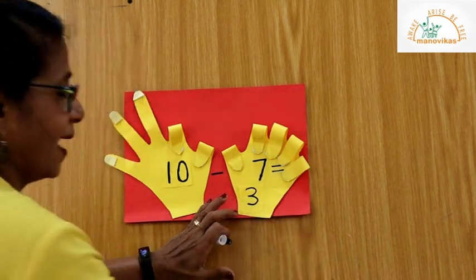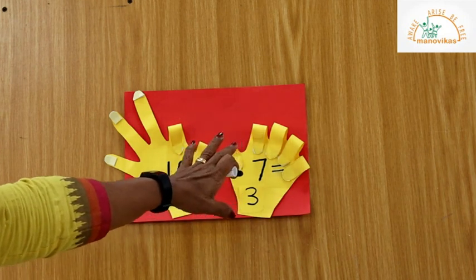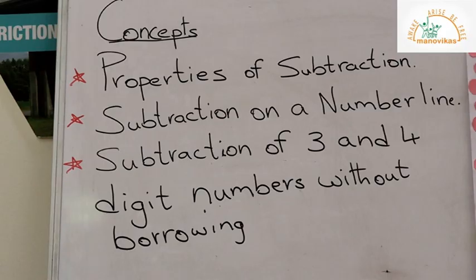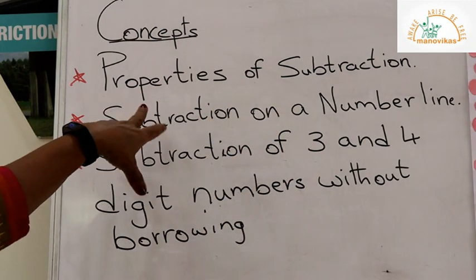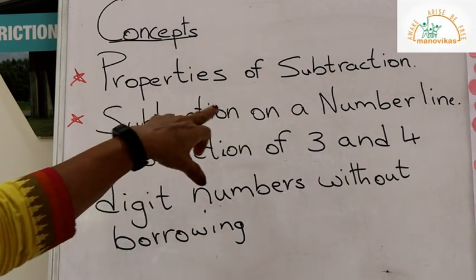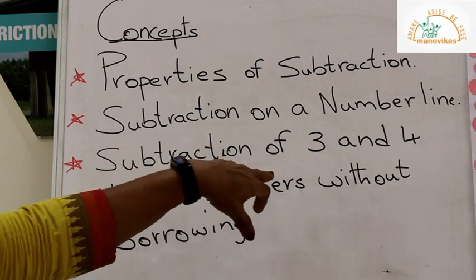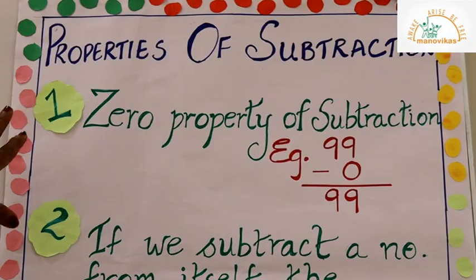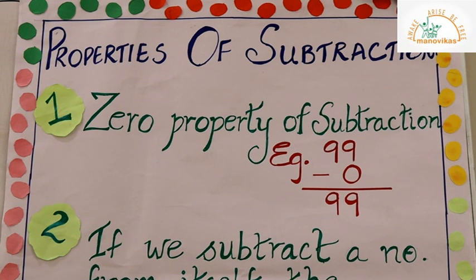So the answer is 3 — 10 minus 7 gives us 3. The concepts we will cover today on subtraction are: properties of subtraction, subtraction on a number line, and subtraction of three and four digit numbers without borrowing. The first property is the zero property of subtraction.